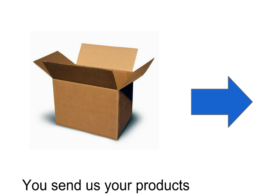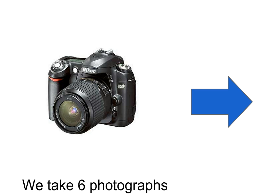First of all we need the product — either that or you can take six photographs yourselves. Ultimately the job starts with you sending us your products. We then take six photographs: one from the top, the bottom, and then one from the side — the left, the right, the front, the back. We take those six photographs for you, or alternatively you can take them yourselves.